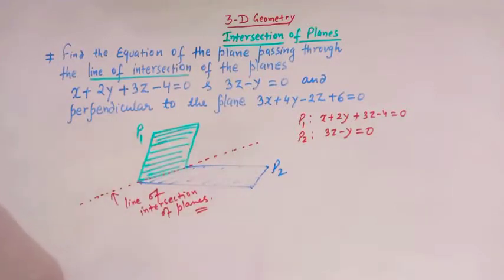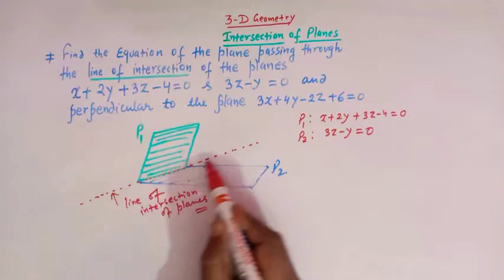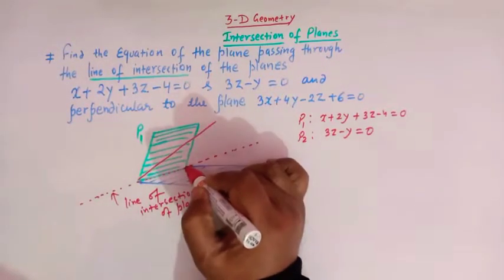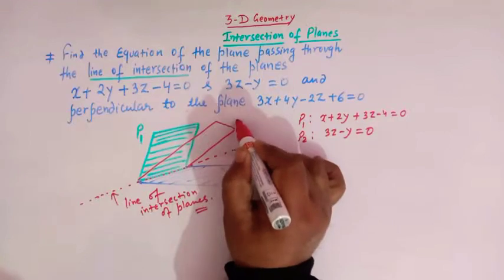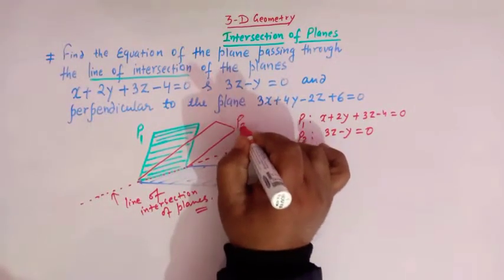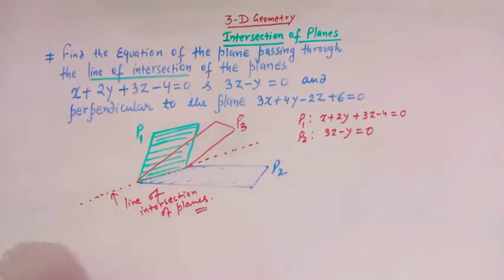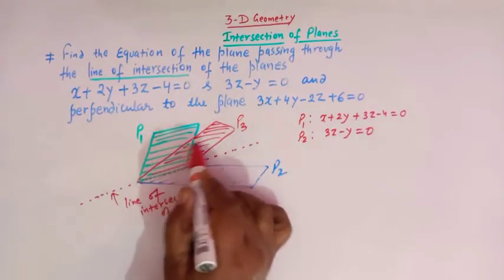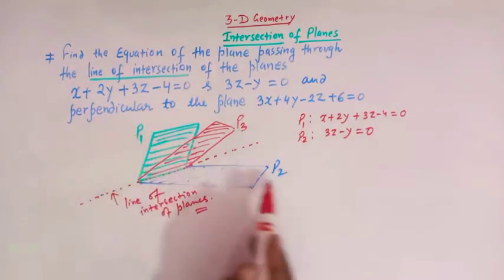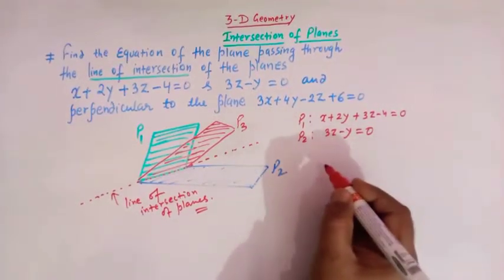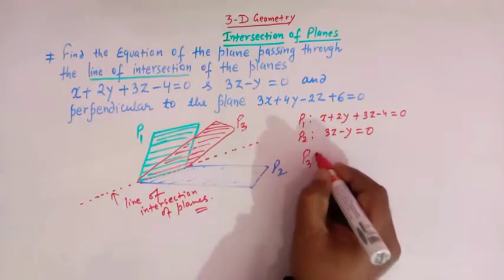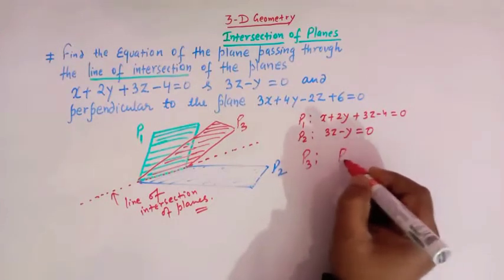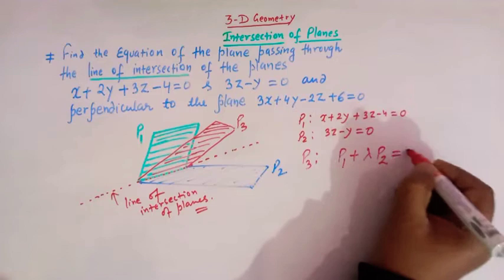We have to find the equation of the plane P3 which passes through the line of intersection of P1 and P2. We know that the equation of any plane passing through the line of intersection of P1 and P2 is given by P1 + λP2 = 0.